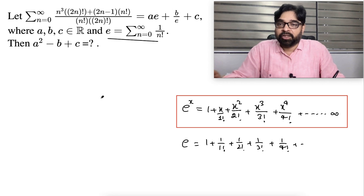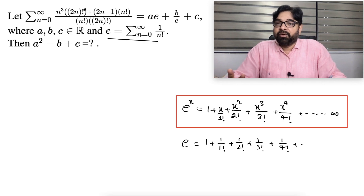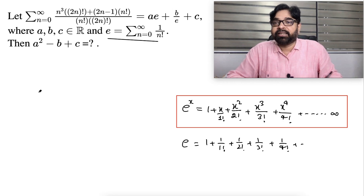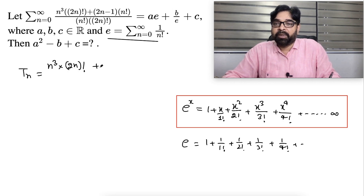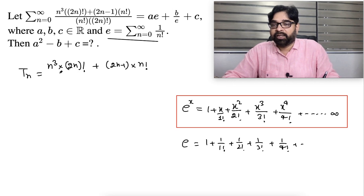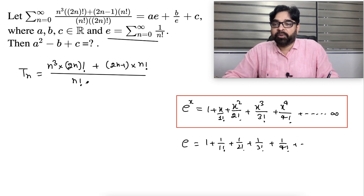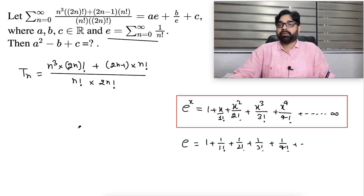Let's come to the question. The nth term is given as: T_n = [n³·(2n)! + (2n−1)·n!] divided by [n!·(2n)!].